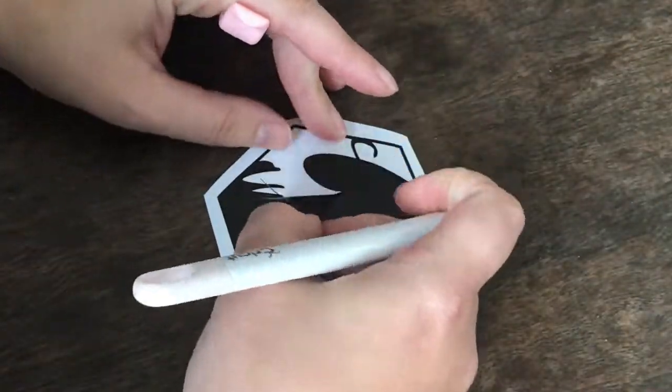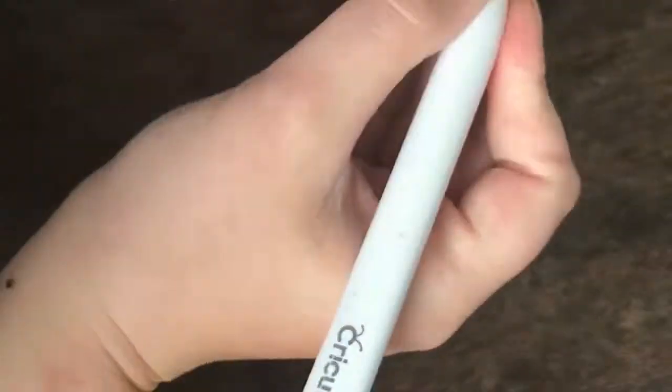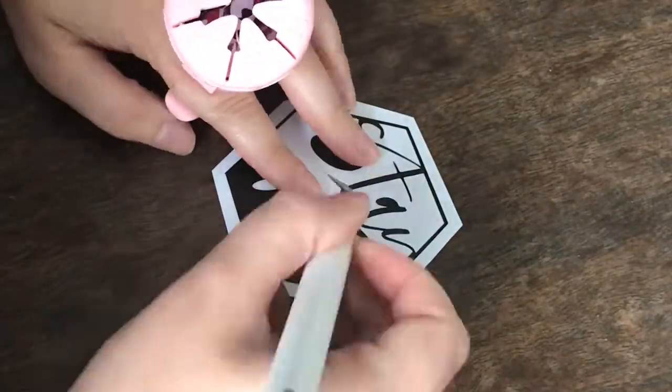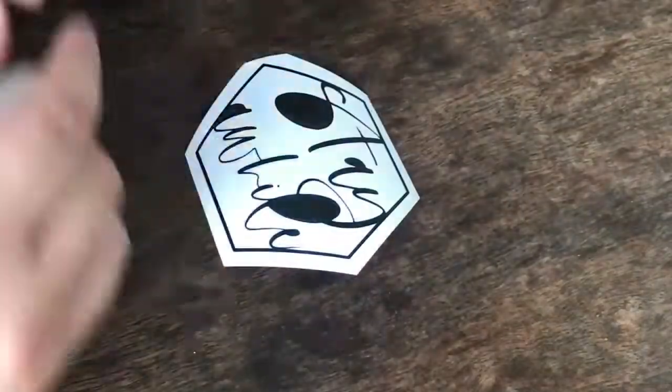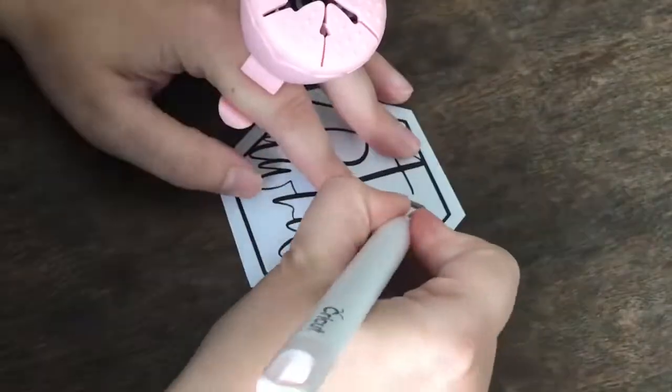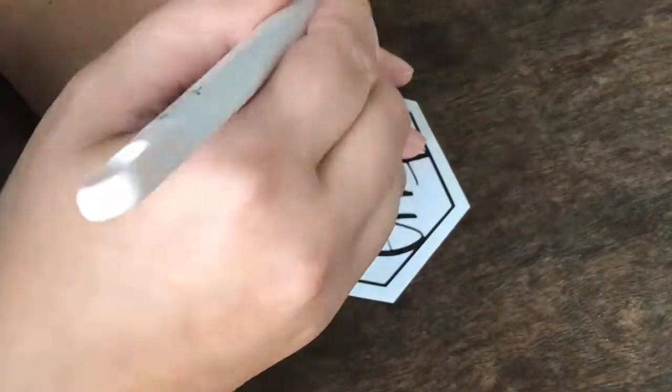Once my designs are cut I just cut away the excess vinyl and now I'll begin weeding my design. I typically try to be very careful when doing this because it's easy to lose pieces as you're weeding.